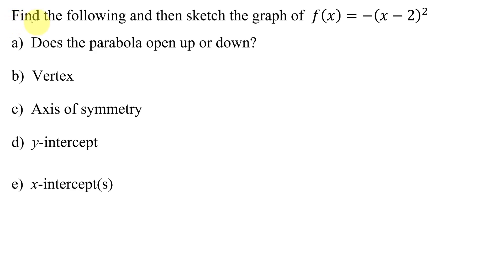In this example, I need to find the following and then sketch the graph of f(x) equals negative the quantity x minus 2 all squared. This is the information I need to find before I can sketch the graph. And what type of function do I have here? Notice if I multiply out this binomial, I'm going to get an x squared term. So this is a quadratic function and it is written in standard form.